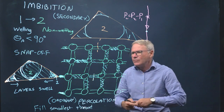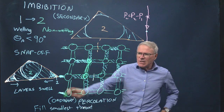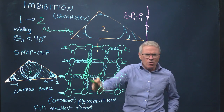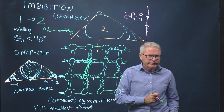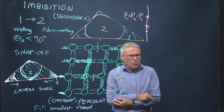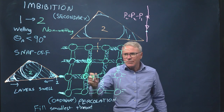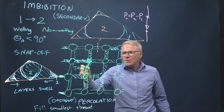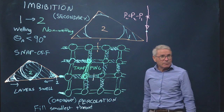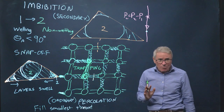Now let's look at this: imagine the next narrowest throat is this one. But how does the non-wetting phase — the gas or the oil — escape? It doesn't have wetting layers. It's in the centre of the pore space. It's surrounded by water. It can't. It's trapped. So what this leads to is trapping — this region of the pore space is trapped, and it cannot move, it cannot escape.